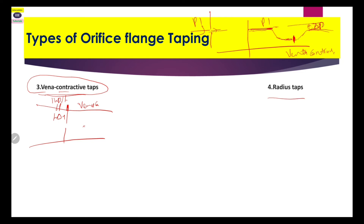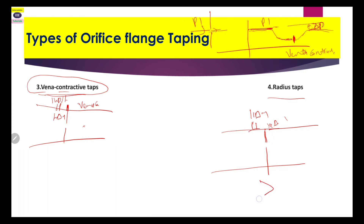The next type is radius tapping. This is your pipeline and this is your orifice. The first tapping is at 1D upstream, and the second tapping is at half D downstream. The recommendation is that you can use the radius type of orifice plate easily for pipe sizes greater than 6 inches.